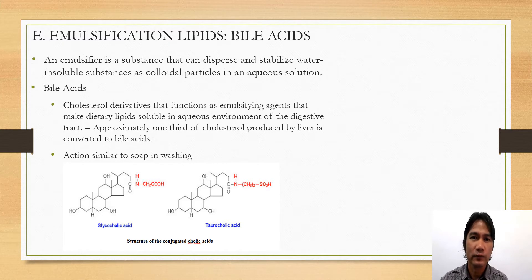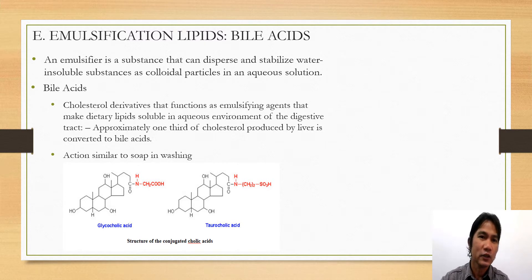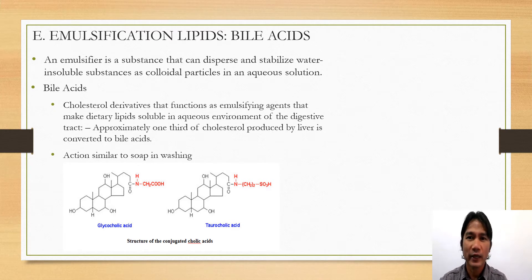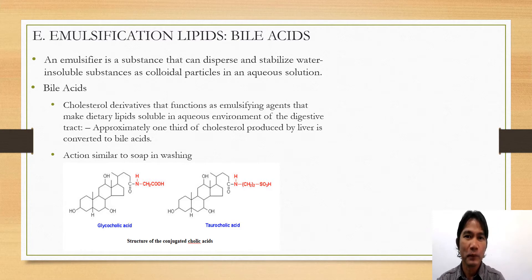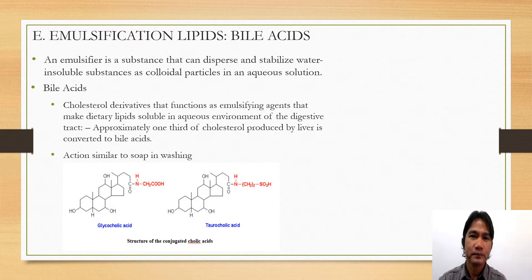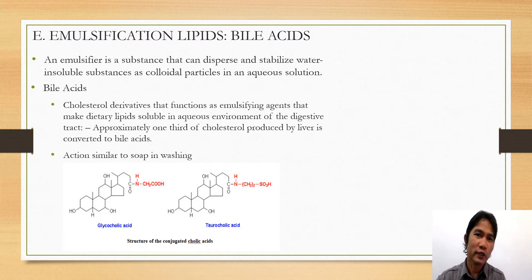Examples of emulsification lipids are the bile acids. First, what is an emulsifier? An emulsifier is a substance that can disperse and stabilize water-insoluble substances as colloidal particles in aqueous solution. What it means is this emulsifier can break the surface tension. For example, you have water and oil. As we all know, the two substances cannot mix together.